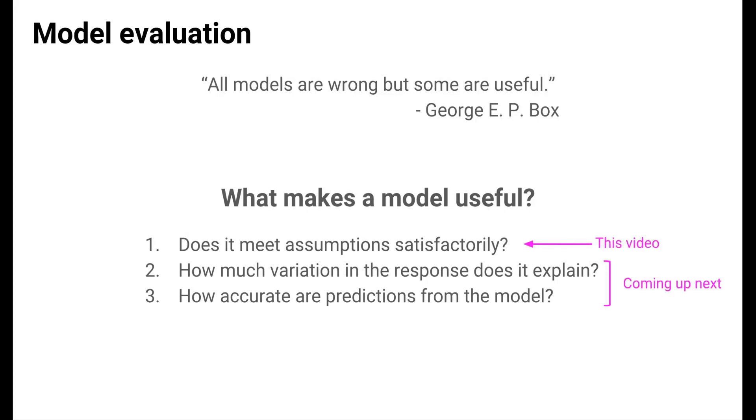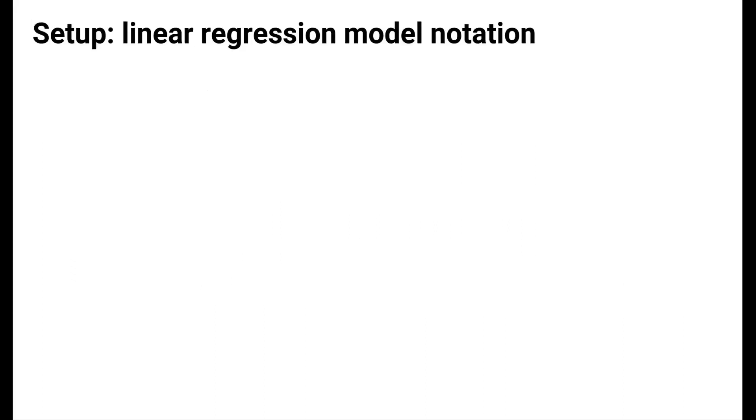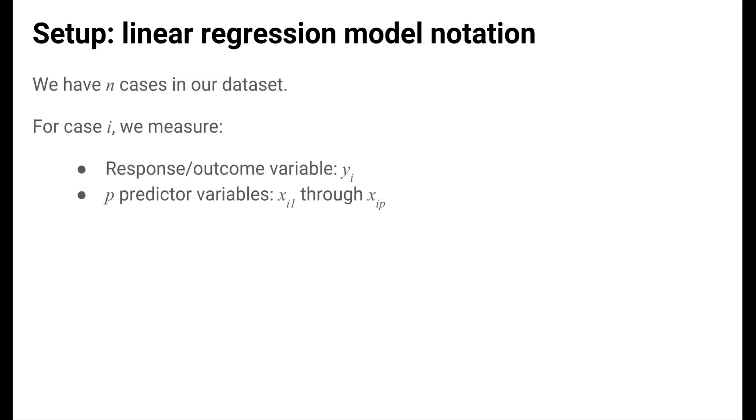We'll focus on question 1 in this video and get to questions 2 and 3 in the next. In this video, we'll be talking about the assumptions of linear regression, so let's first review the notation we use to write down or to express linear regression models. We have n cases in our data set, and for each case i, we measure the response or outcome variable yi. We also measure p predictor variables xi1 through xip.